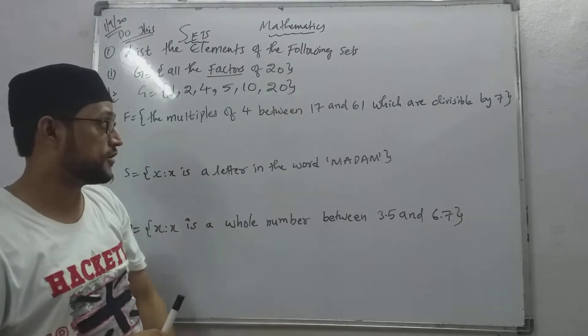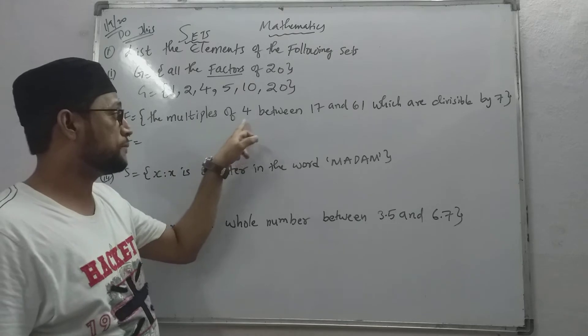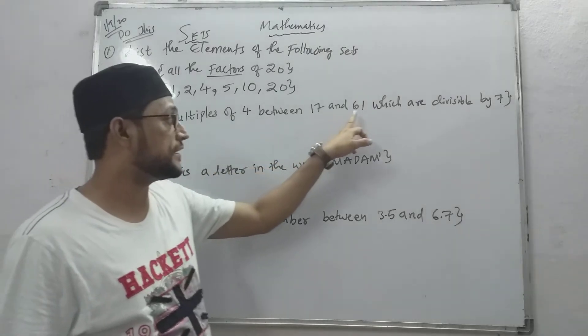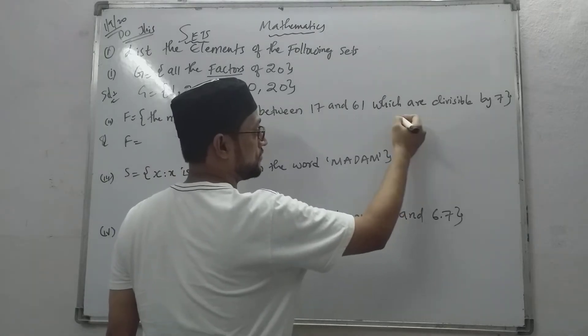Got it everyone? Now, next one. Next set F - the multiples of four between seventeen and sixty-one.